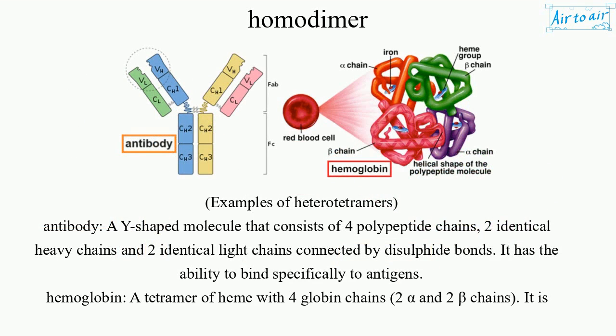Examples of HETEROTETRAMERS — Antibody: a Y-shaped molecule that consists of four polypeptide chains, two identical heavy chains and two identical light chains connected by disulfide bonds. It has the ability to bind specifically to antigens.